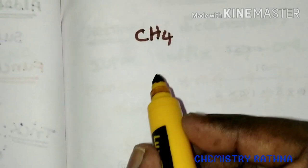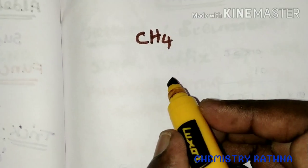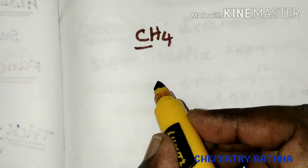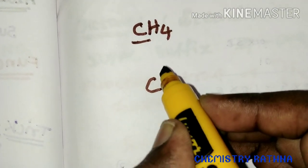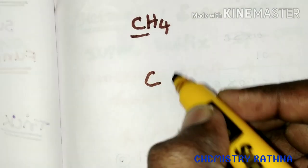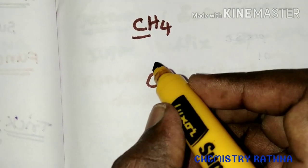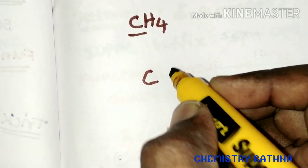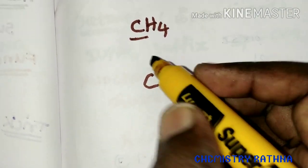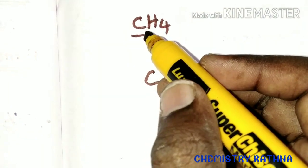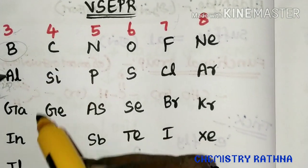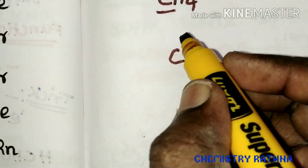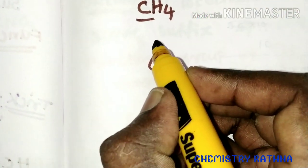Let's take CH4 — methane. CH4 is methane. This is the central atom. Carbon is the central atom. We need to find the valence electrons. Carbon has 4 valence electrons.